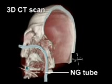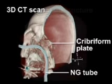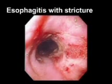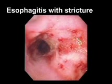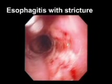Nasogastric intubation should be avoided in patients with significant maxillofacial trauma, as the tube may enter the cranial vault if the thin cribriform plate has been disrupted. The procedure should also be avoided in patients with known esophageal abnormalities such as recent caustic ingestion or diverticulae.